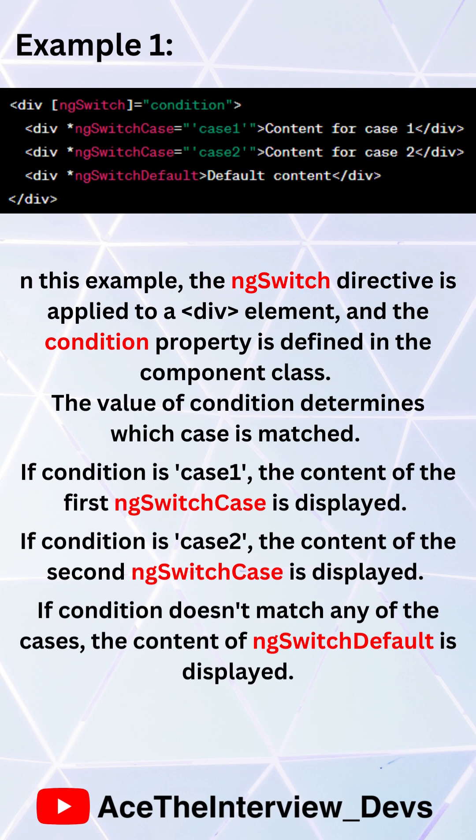In this example, the ng-switch directive is applied to a div element and the condition property is defined in the component class. The value of condition determines which case is matched. If condition is case 1, the content of the first ng-switch case is displayed. If condition is case 2, the content of the second ng-switch case is displayed. If condition doesn't match any of the cases, the content of ng-switch default is displayed.